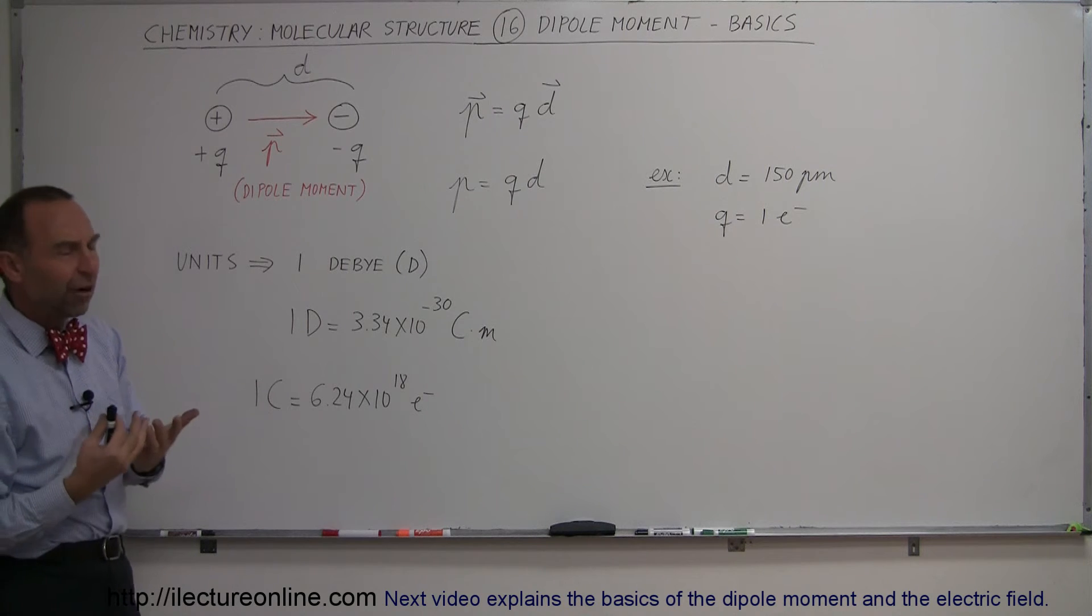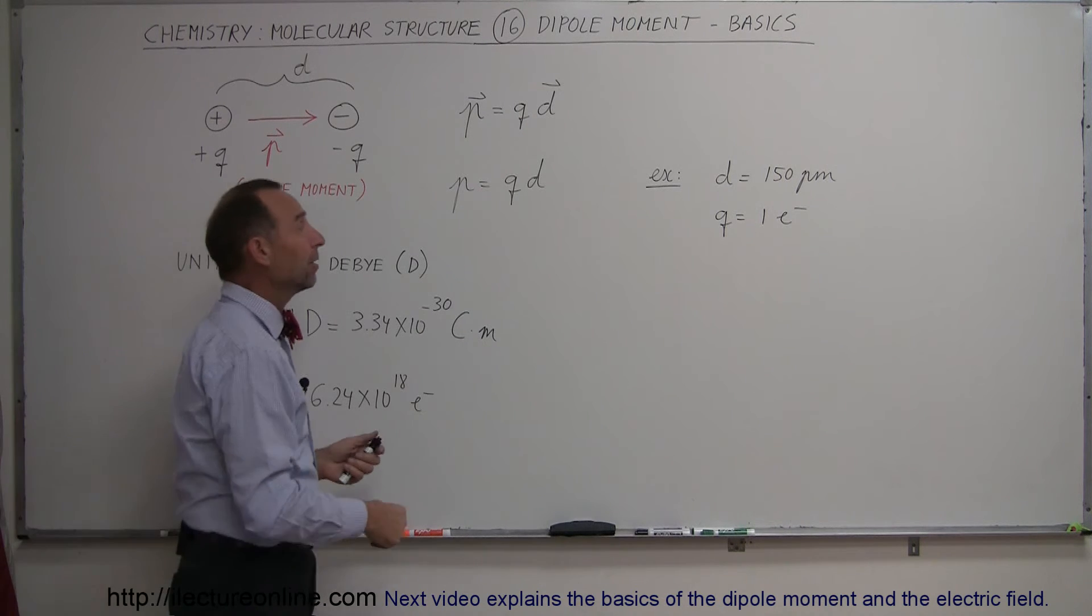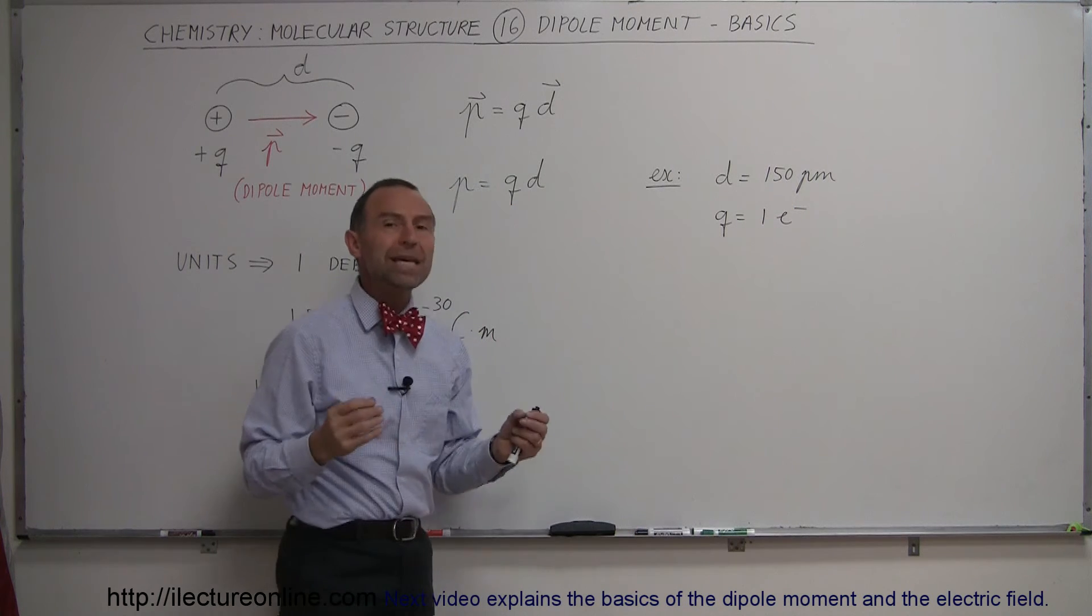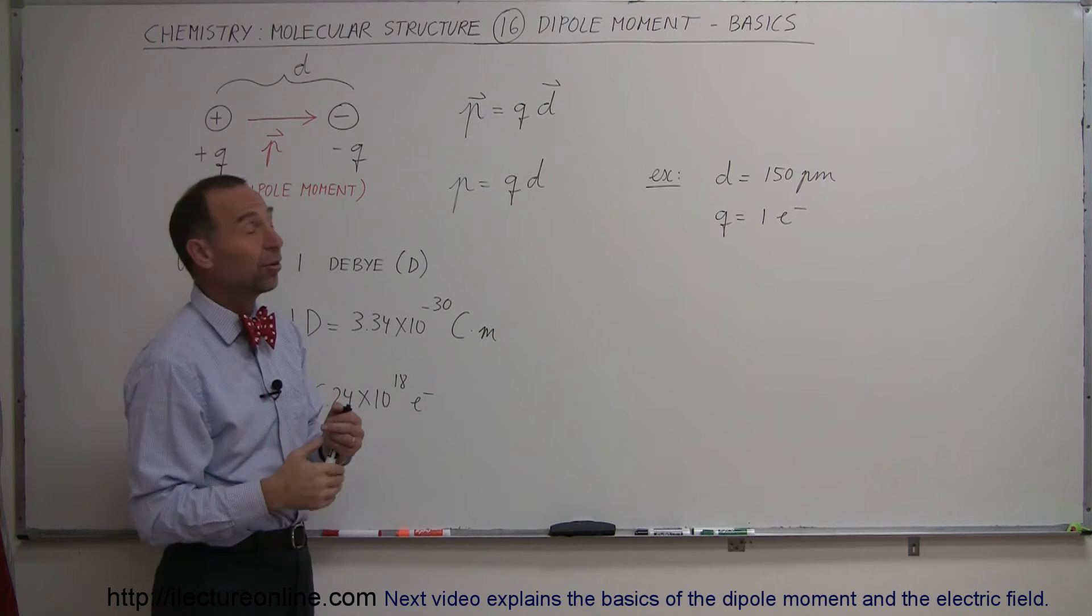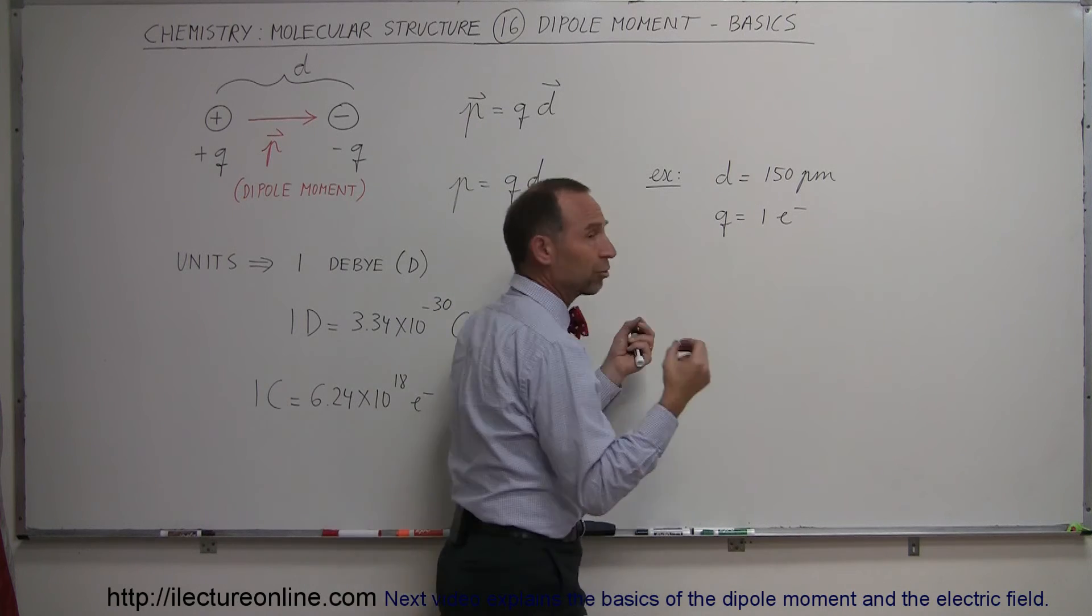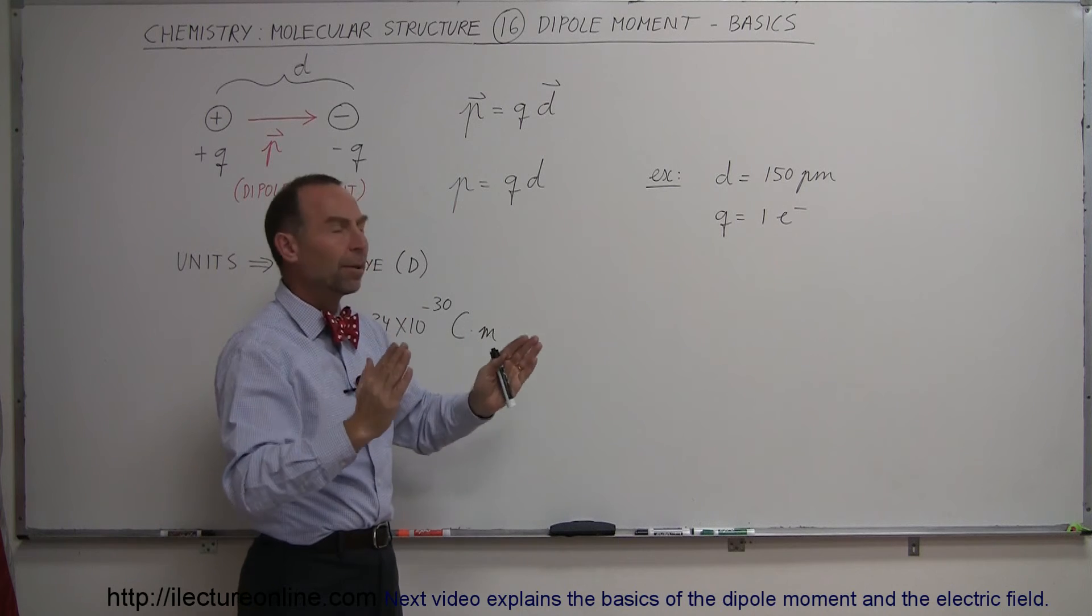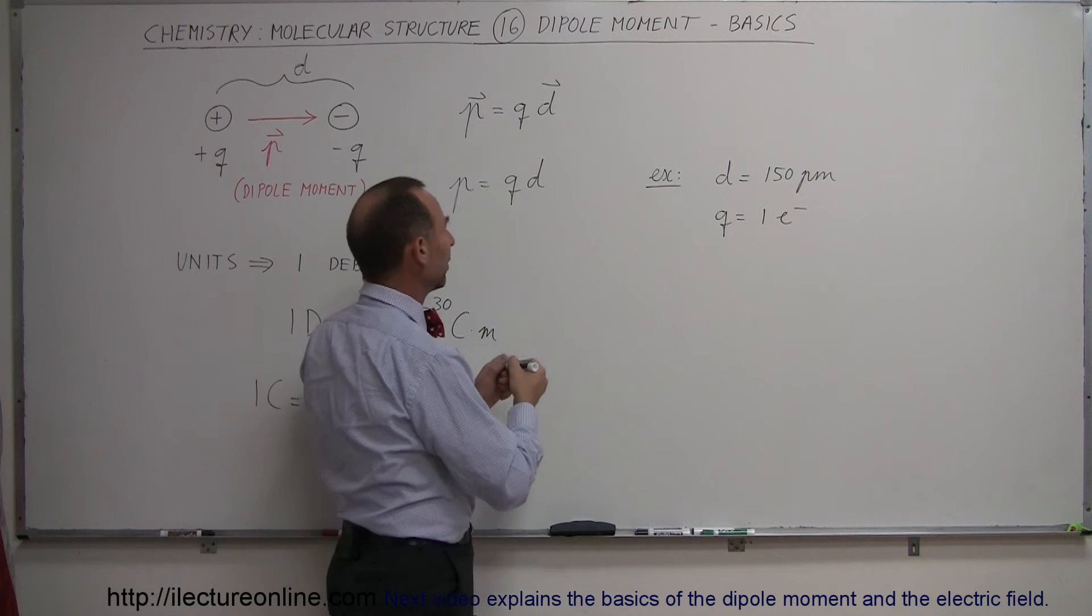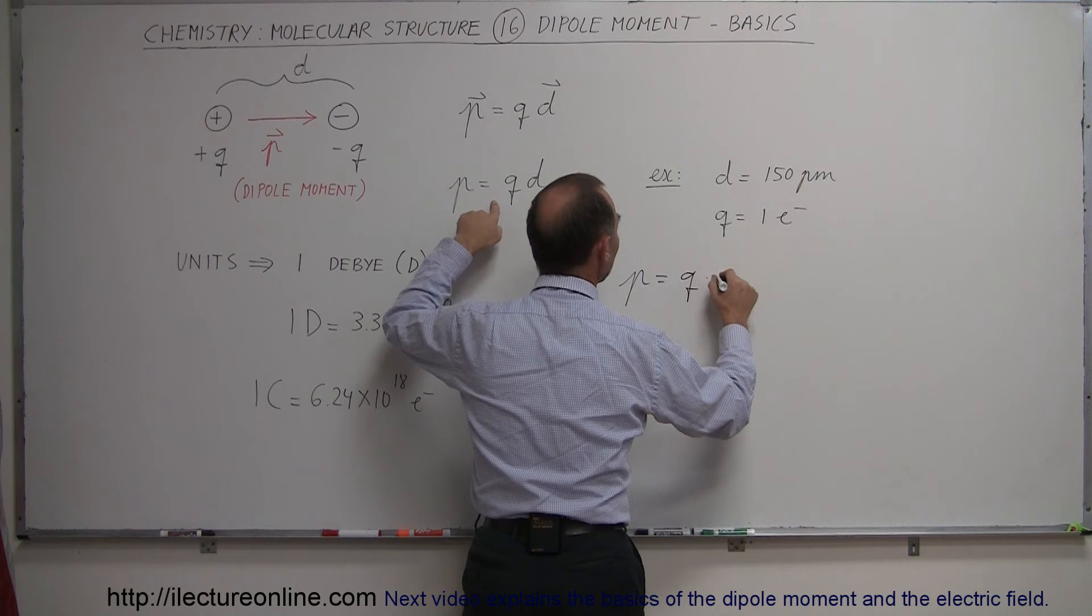So just to get a feel for how do you calculate the magnitude of the dipole moment. Let's say that we had two charges separated from one another with a distance of 150 picometers. So remember a picometer is one one-thousandth of a nanometer, 10 to the minus 12 meters. And let's say that the charge is equivalent to an electron charge. So you have two charges, a positive charge and a negative charge separated by 150 picometers. What would be the magnitude of the dipole moment? You can say then that the magnitude μ is equal to q times d.